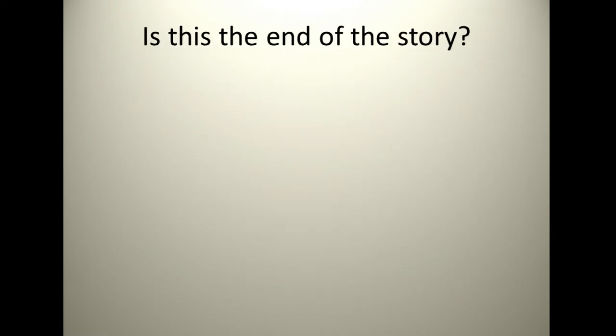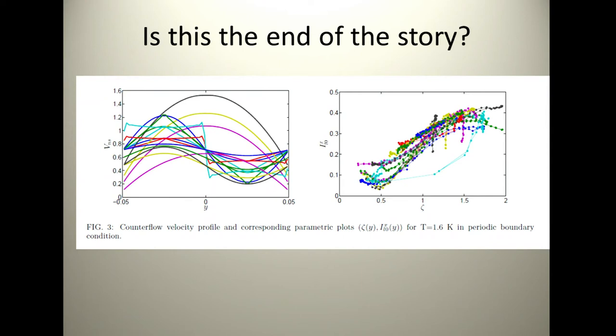However, is this the end of the story? Absolutely not. Let's now do different profiles of VNS, different forcing by the normal and supervelocity. You do the parabolic, but you do also sine wave, you do all kinds of things, and disaster. This doesn't fall on the function at all. It's not only a function of zeta. There's no data collapse.